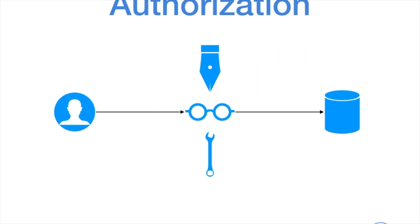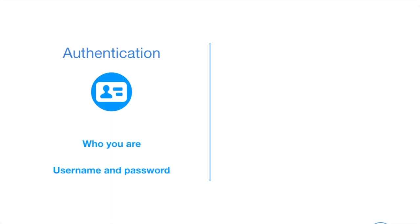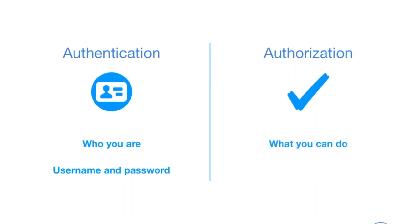So authorization is very much someone saying what you can and can't see and do, and authentication is very much focused upon who we are. At a high level, authentication — think of an identity, think of who you are, and think of a username and password. Any situation where you might have to pass along a username and password to say who you are is when you're talking about authentication. Authorization, on the other hand, is far more focused on what you can do — what your profile is, what you can see, what you can change, what you can edit.